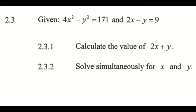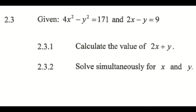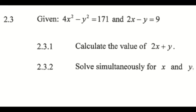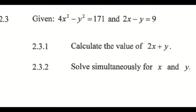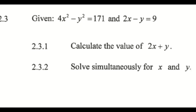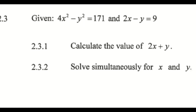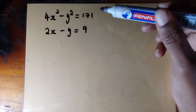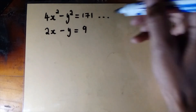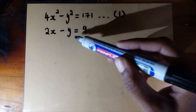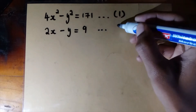We are given 4x squared minus y squared equals 171, and 2x minus y equals 9. Question 2.3.1 says calculate the value of 2x plus y. We are given 2x minus y equals 9, and our task is to find the value of 2x plus y. Let us label our two equations: equation 1 is 4x squared minus y squared equals 171, and equation 2 is 2x minus y equals 9.